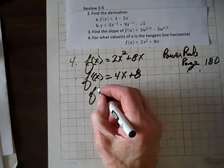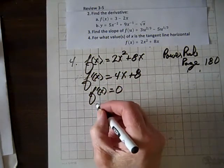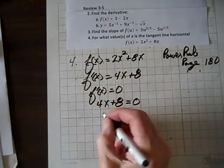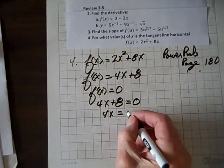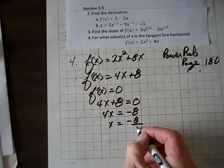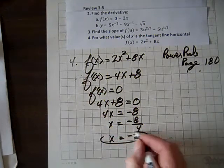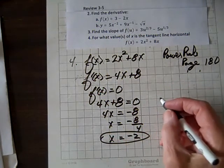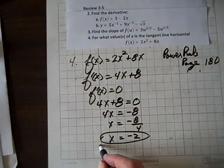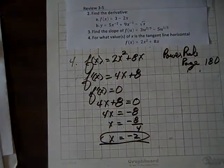And now we'll set that derivative equal to zero, that means we'll set four x plus eight equal to zero, solving for x, we get four x equals negative eight, so x equals negative eight over four, so that equals negative two. So for what value of x is the tangent line horizontal, it's horizontal at the value x equals negative two.